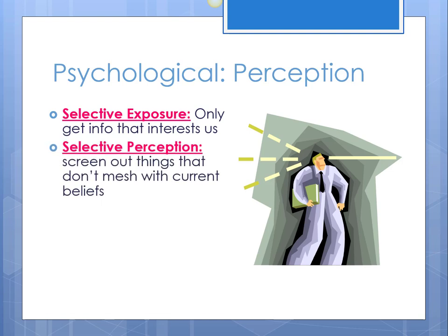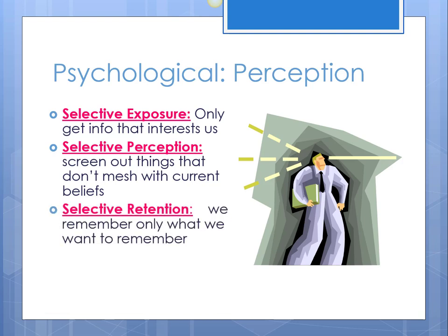The second component is selective perception — does the consumer actually understand what the message is? If a consumer doesn't understand, they kick the message out quickly to make room for a different one. Third, do we remember the message? Most consumers don't remember messages. So getting things into your brain, getting you to understand them, and getting you to remember them so that you can form a perception — this is getting very difficult for marketers.